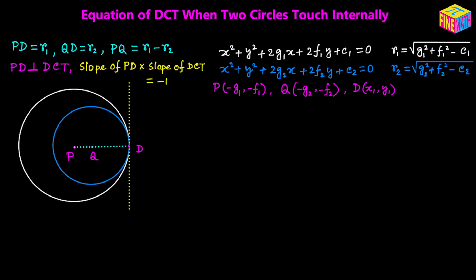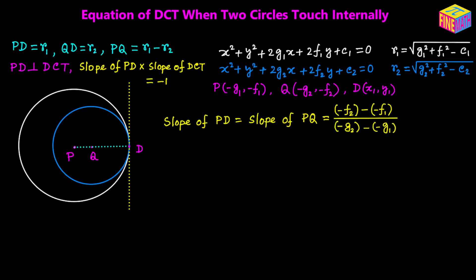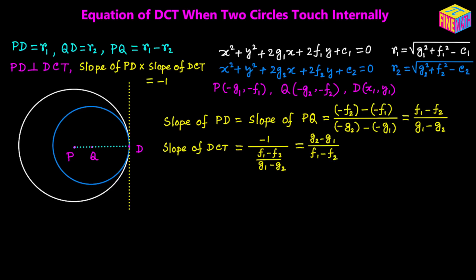So we can say that the slope of PD times the slope of the common tangent equals negative 1, because they are perpendicular and the product of their slopes equals negative 1. The slope of PD equals the slope of PQ and QD, which is: negative F sub 2 minus negative F sub 1, over negative G sub 2 minus negative G sub 1, simplifying to F sub 1 minus F sub 2 over G sub 1 minus G sub 2. So the slope of the common tangent will be negative 1 over that slope, which gives G sub 2 minus G sub 1 over F sub 1 minus F sub 2.